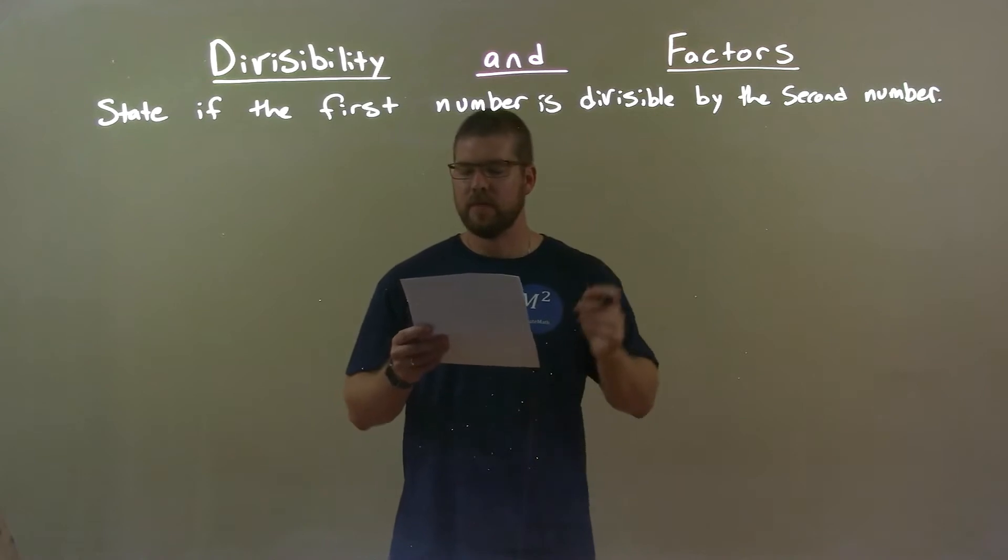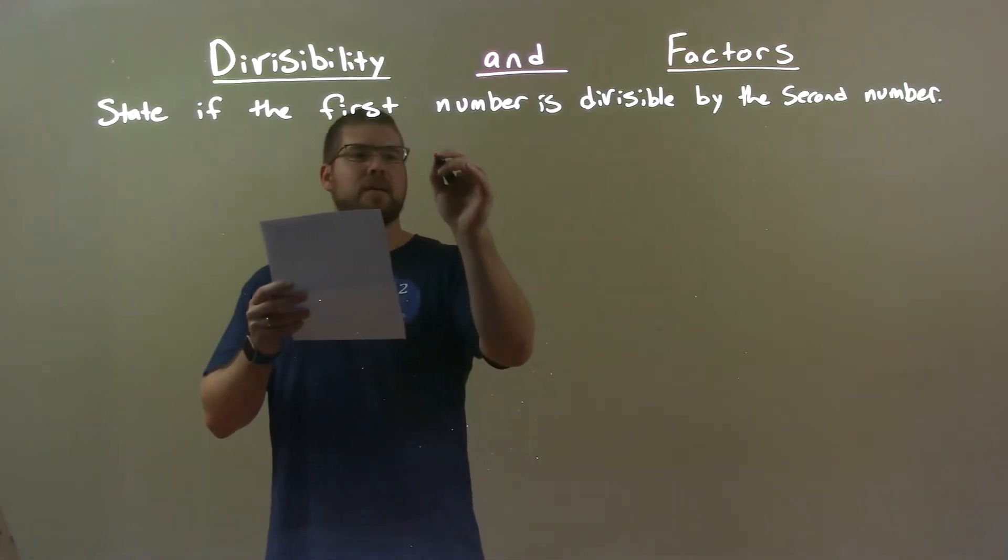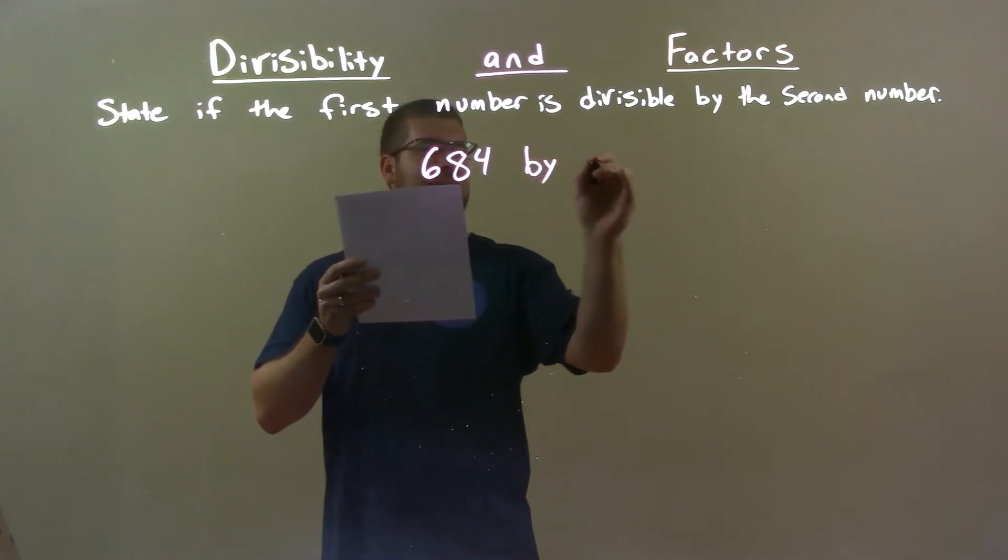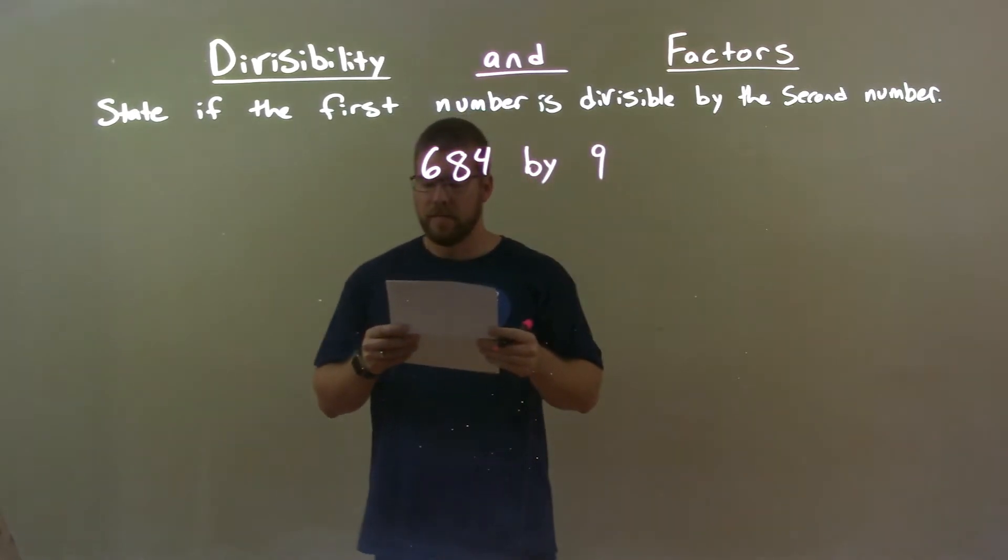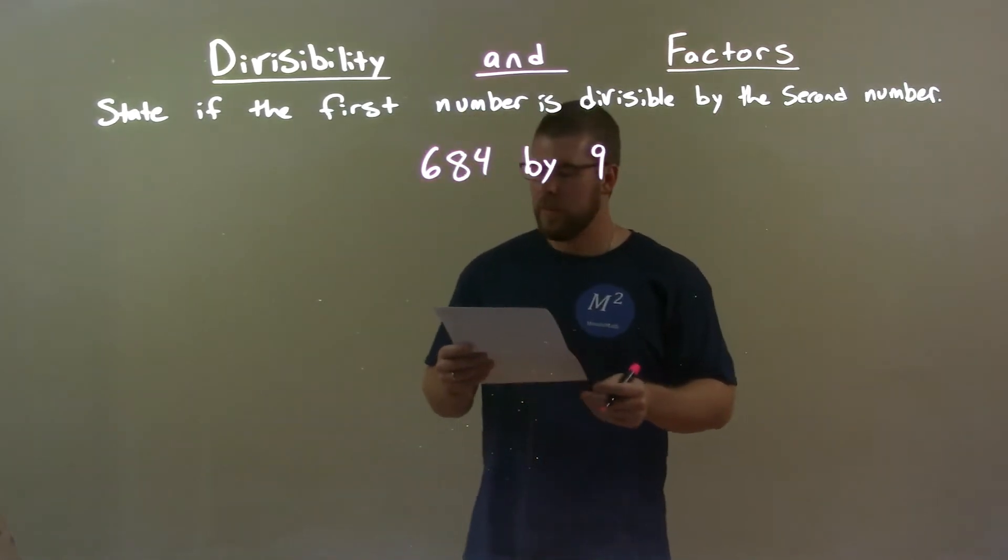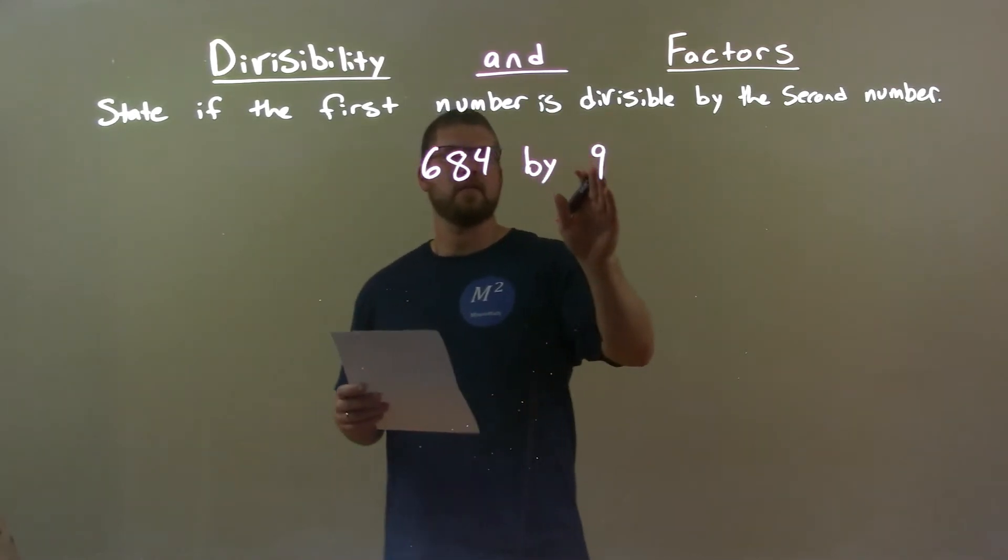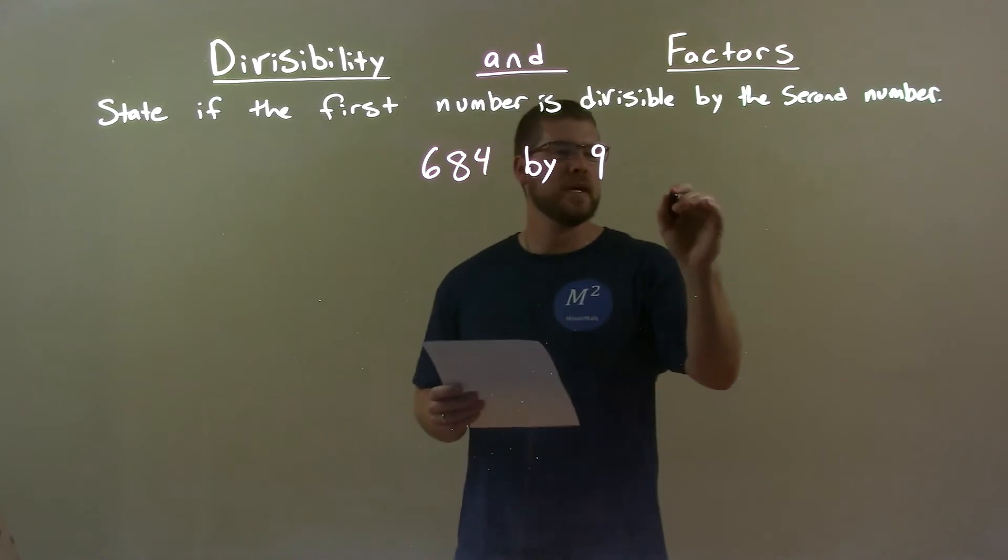If I was given these numbers, 684 by 9, is 684 divisible by 9? Well, first step I say, does 9 go into 684 evenly?